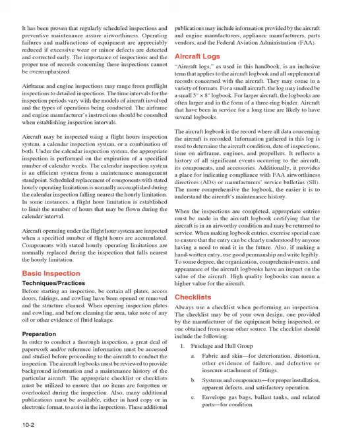Aircraft logs is an inclusive term that applies to the aircraft logbook and all supplemental records concerned with the aircraft. For a small aircraft, the log may be a small 5x8 inch logbook; for larger aircraft, logbooks are often larger and in three-ring binder form. The aircraft logbook is the record where all data concerning the aircraft is recorded, including aircraft condition, date of inspections, time on airframe, engines, and propellers. It reflects a history of all significant events occurring to the aircraft, its components, and accessories.